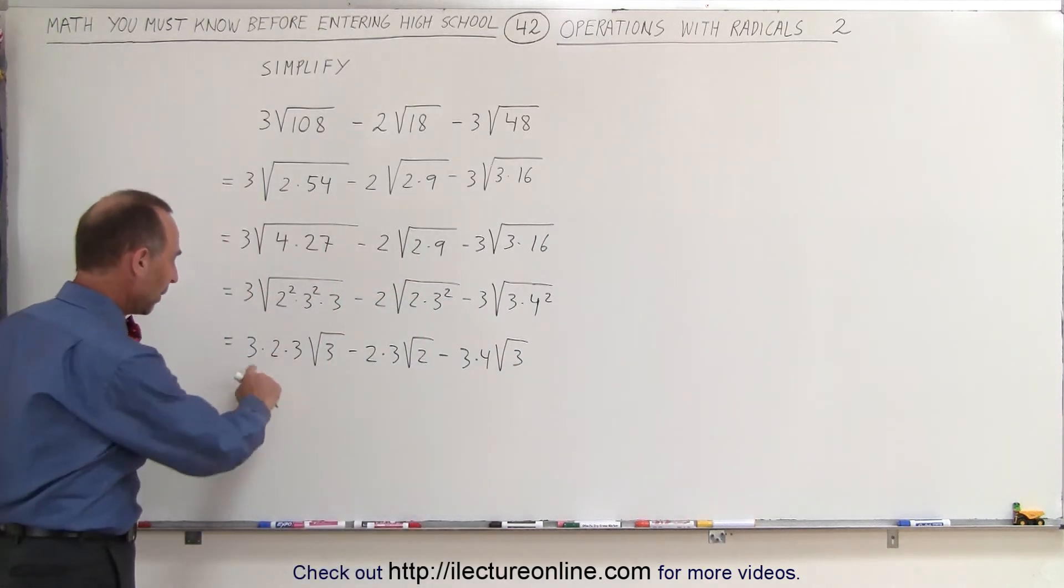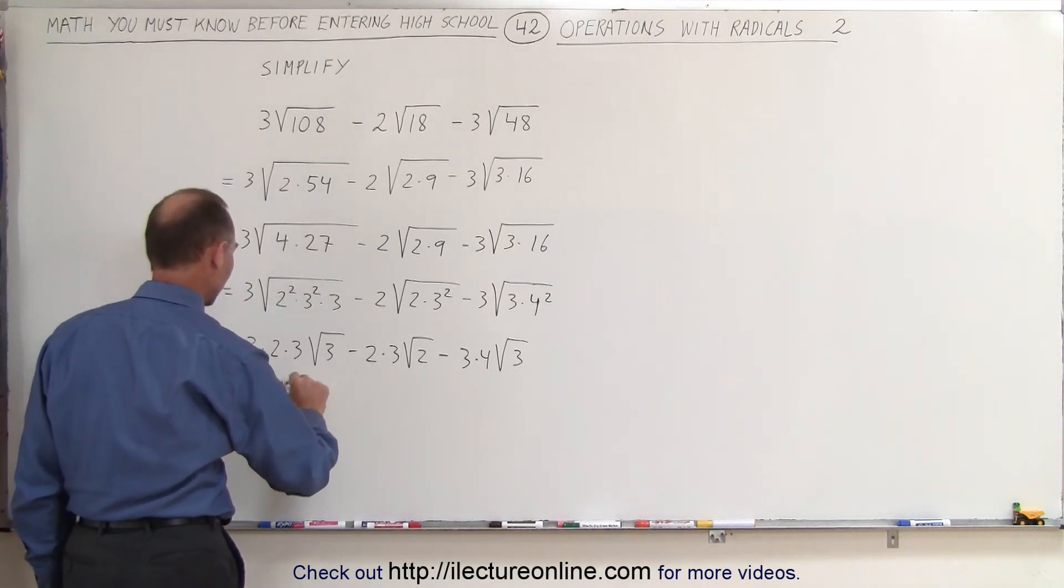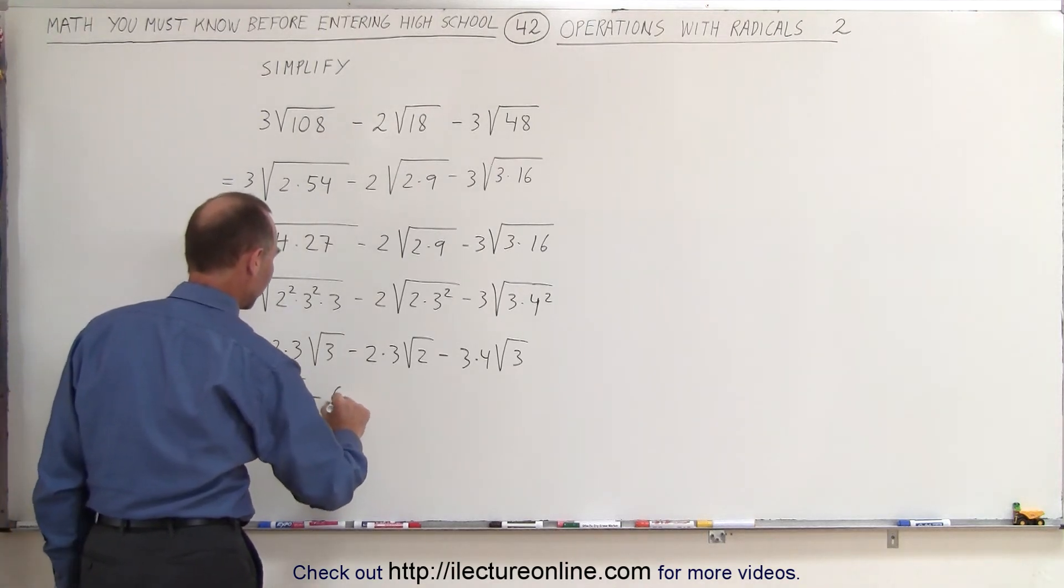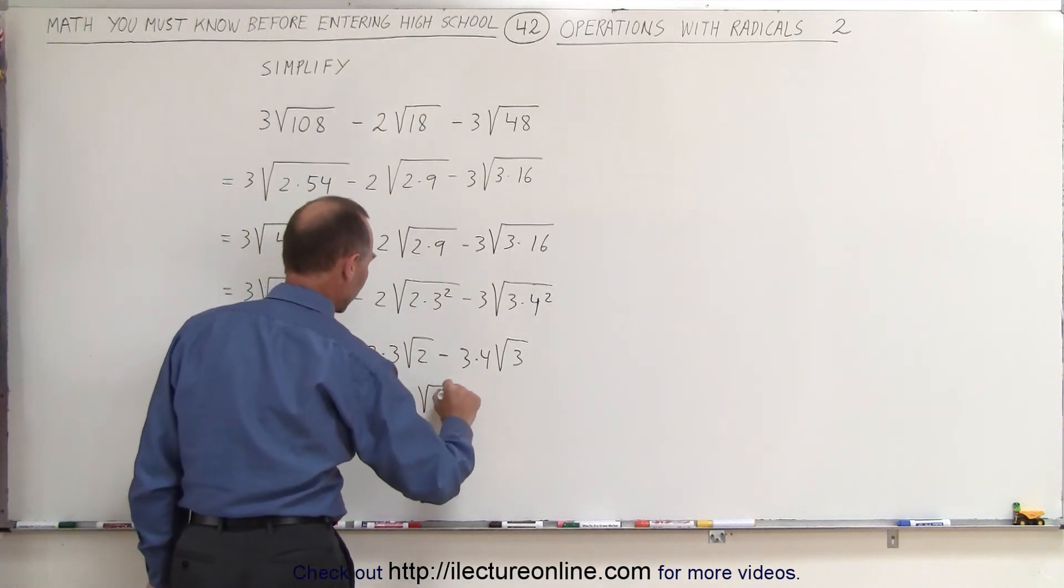Simplifying that a little bit more by multiplying these together, this gives us 9 times 2, which is 18 times the square root of 3, minus 6 times the square root of 2, and minus 12 times the square root of 3.